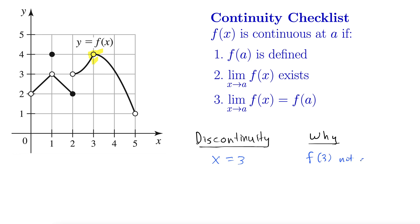Because f of 3 is not defined. Not defined. We could also say that 3 is not in the domain of f. Moving further from right to left, now I'm seeing this jump discontinuity here where at x equals 2 it jumps from 2 to 3.